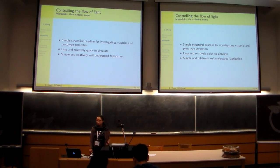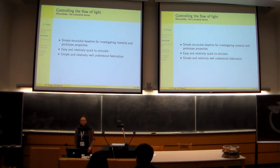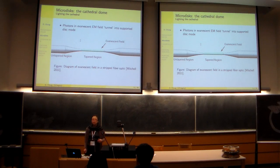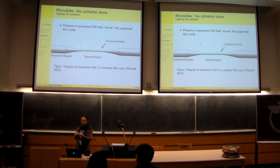So we use microdiscs because the modes that they support are easy and relatively quick to simulate, and we know how to make good microdiscs. So how do I get light inside one of my microdiscs? I use a fiber optic.